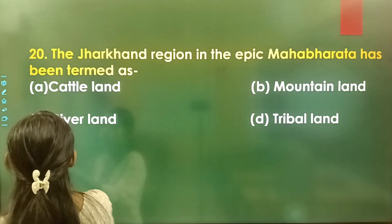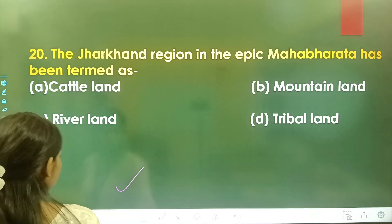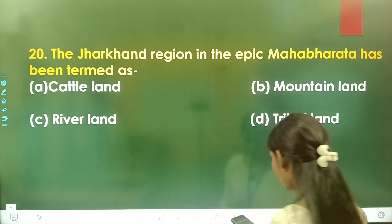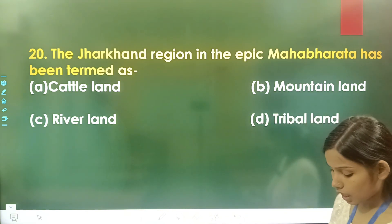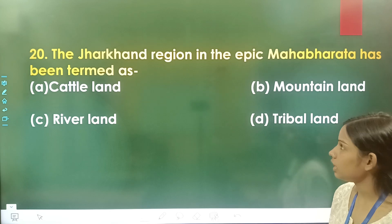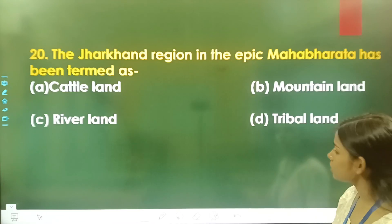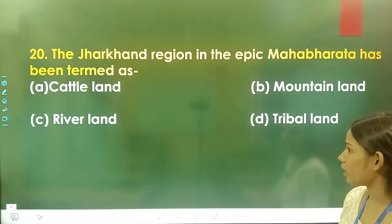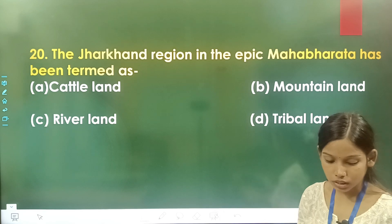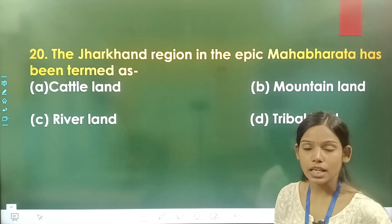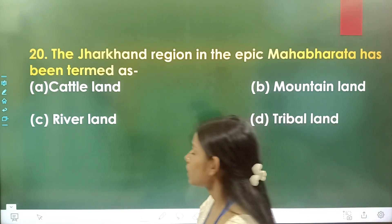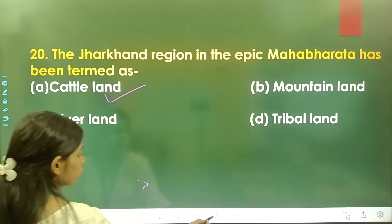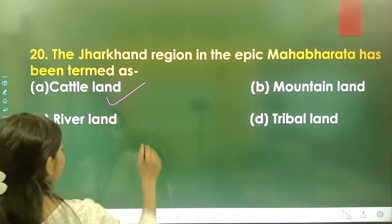The last question: The Jharkhand region in the Epic Mahabharat has been termed as — option A is Cattle Land, option B is Mountain Land, option C is River Land, and option D is Tribal Land. The correct answer is option A, Cattle Land.